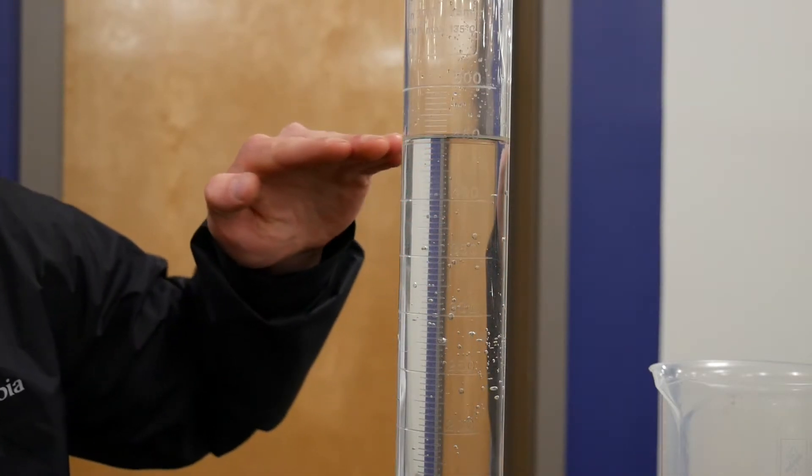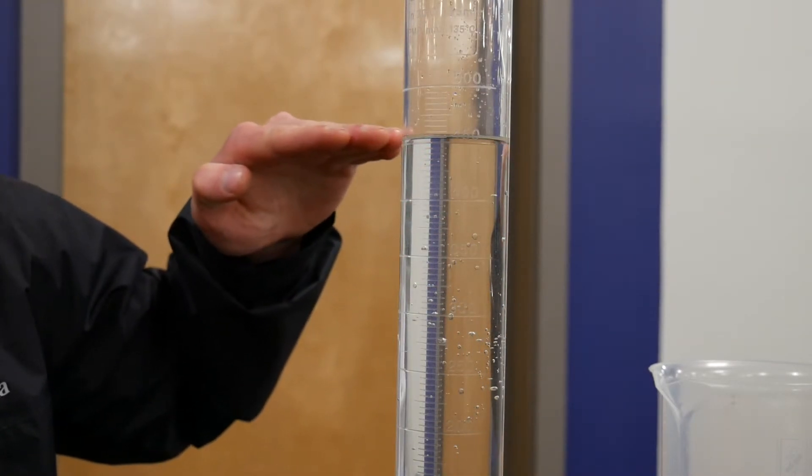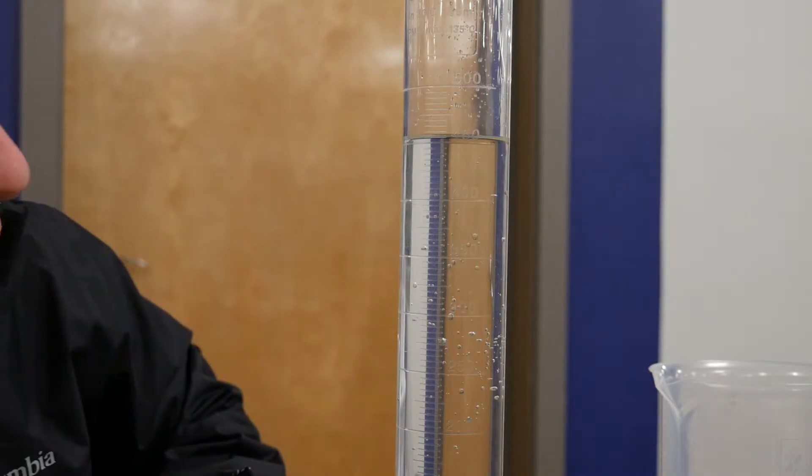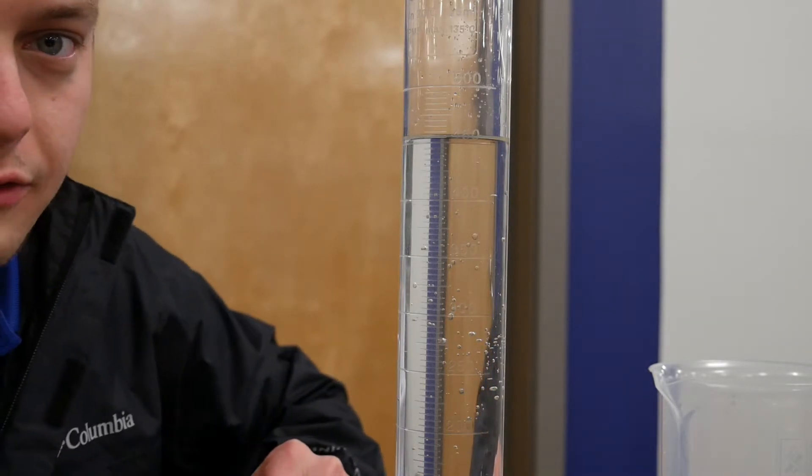So looking here at the middle of the water line, right at the top of the level of the water, we're going to look straight across at eye level and Parker's hand measured 455 milliliters.